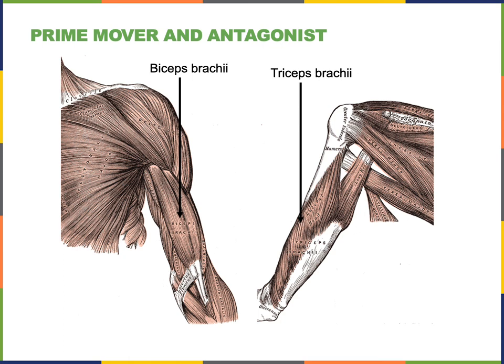The muscle that resists or slows down an action is known as the antagonist. So the triceps brachii is the antagonist for the action of flexion at the humeral-ulnar joint. Typically, the antagonist of one action will be the agonist or prime mover for the opposite action — triceps brachii would be the prime mover for extension of the humeral-ulnar joint, whereas biceps brachii would become the antagonist during extension.